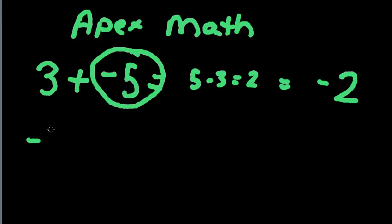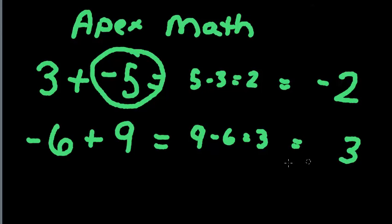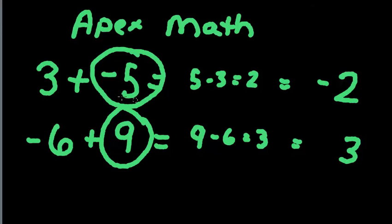If we had negative 6 plus 9, if we look at those two numbers, again they have opposite signs, which means you subtract the two numbers. Forget about the signs for a minute — we just subtract: 9 minus 6 gives us 3. So our answer is going to be 3, but we have to decide what sign the 3 should have. The 9 is the bigger of the two numbers, so we look at the sign on the 9, and the sign was positive, so the 3 keeps that sign. That's how we handle it when the two numbers have opposite signs.